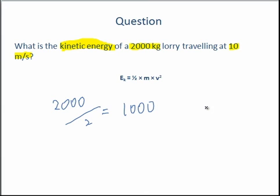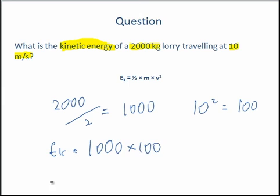And then we need to find out what our speed squared is. So 10 squared equals 10 times 10, which is 100. So essentially, Ek equals 1,000 times by 100. So our answer is 100,000 joules.